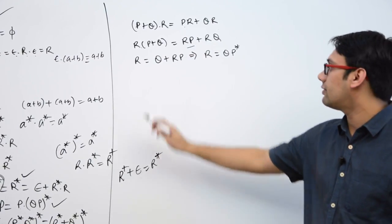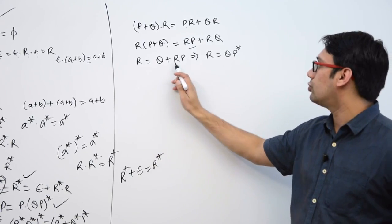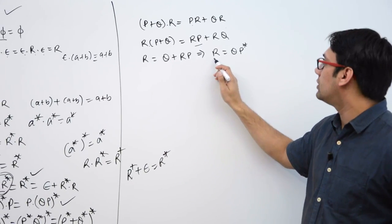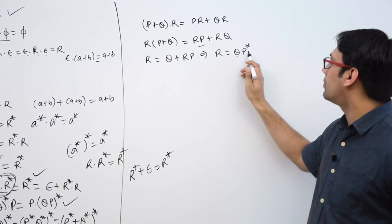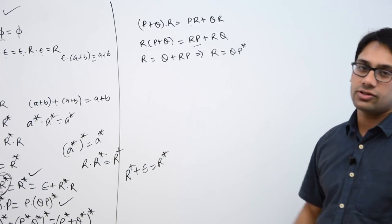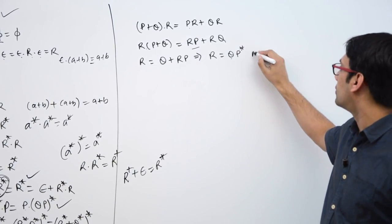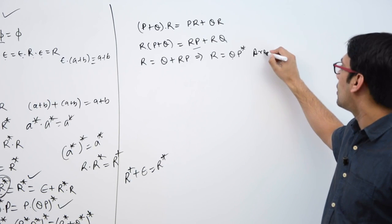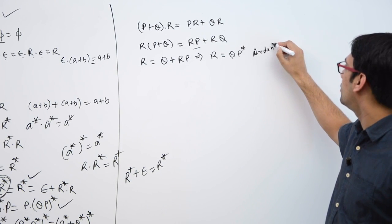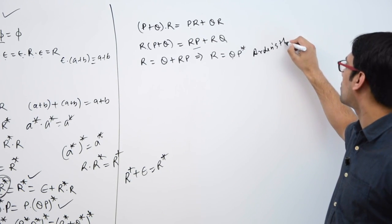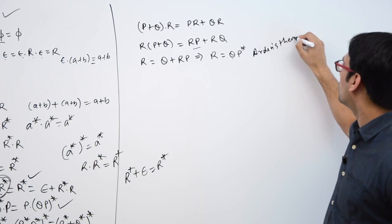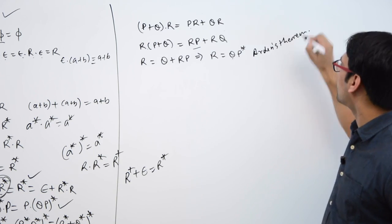When we have r = q + rp, then this can be written as qp*. This is called Arden's theorem.